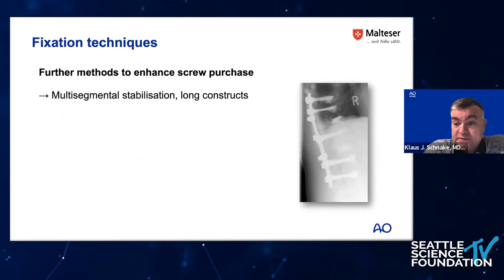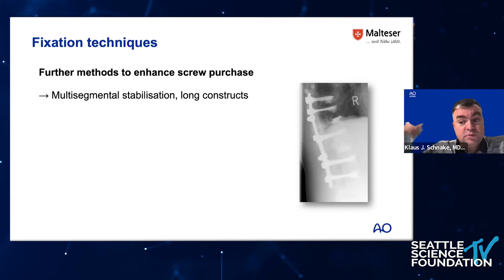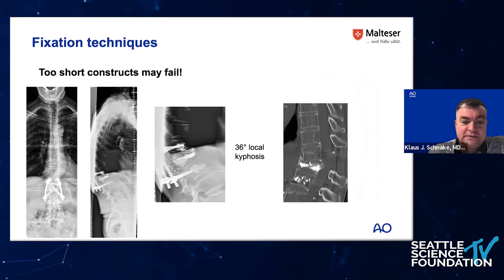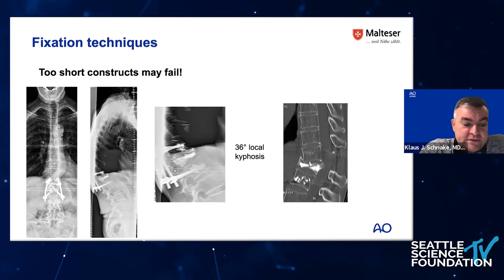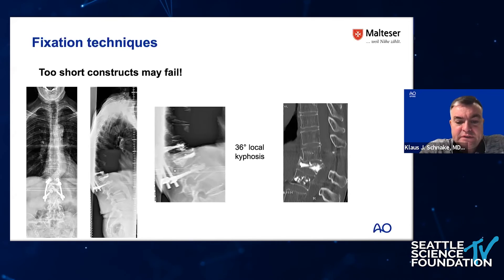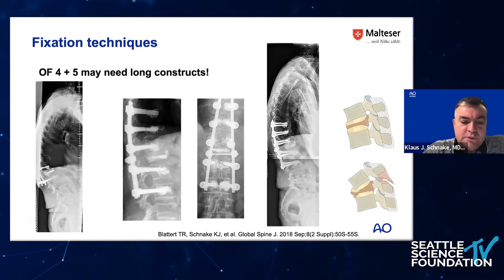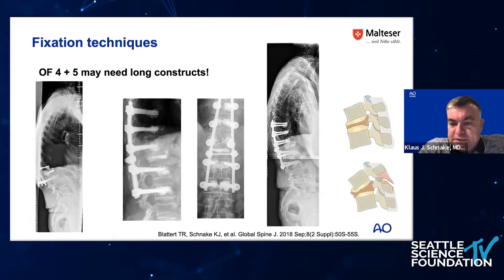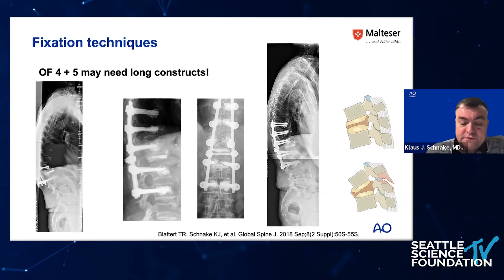Further methods to enhance screw purchase are multi-segmental and long constructs. The longer the construct, the more solid the fixation; however, longer constructs increase the risk of adjacent segment pathology. Here is an example of a short construct in an O4 fracture at the thoracolumbar junction with percutaneous PMMA-augmented screws: local kyphosis of 36 degrees resulted, which is not a good outcome. Revision with a PSO — pedicle subtraction osteotomy — was performed, shortening the spine and allowing a shorter final construct.